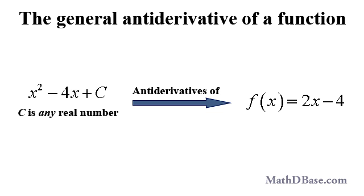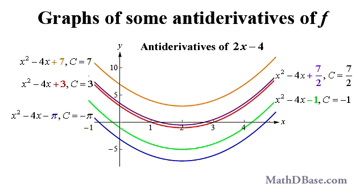We can express all of the antiderivatives of f, or the general antiderivative of f, as x squared minus 4x plus c, where c is any real number. Graphically, the antiderivatives of f represent vertical translations of the same function, differing only by the value of the constant term c.